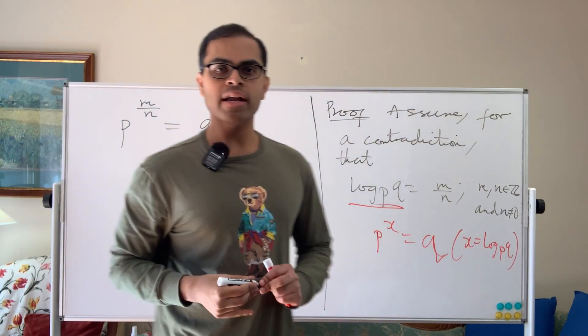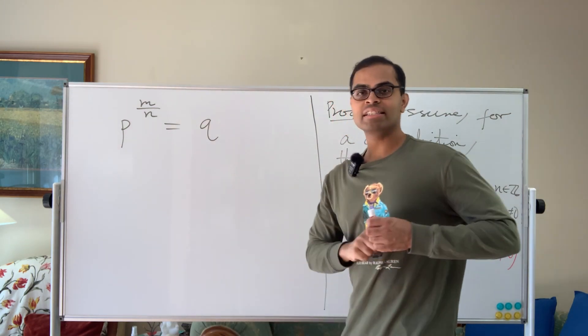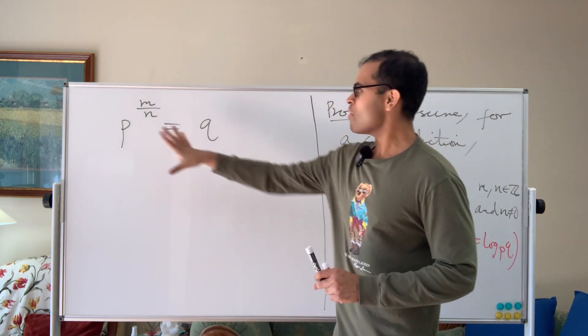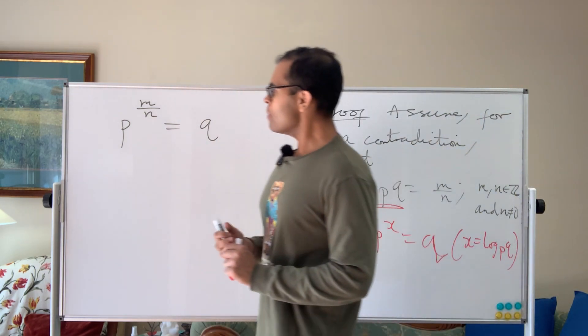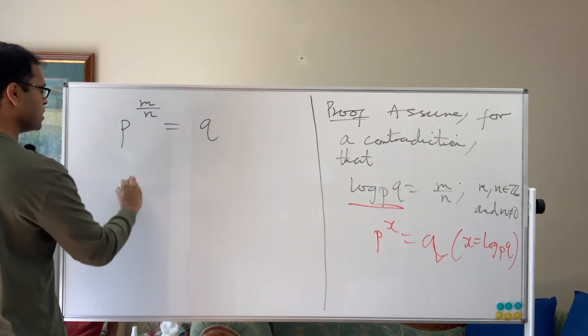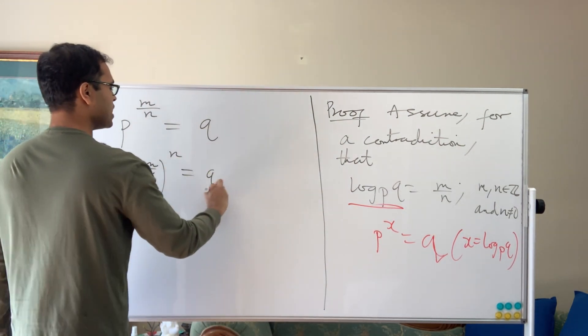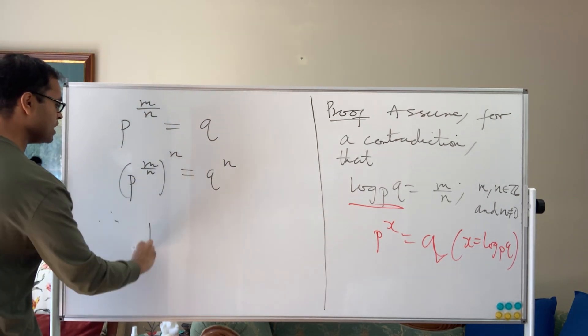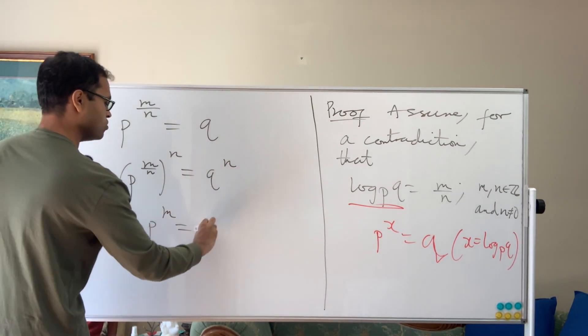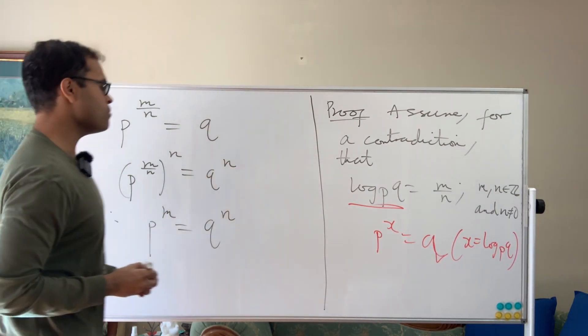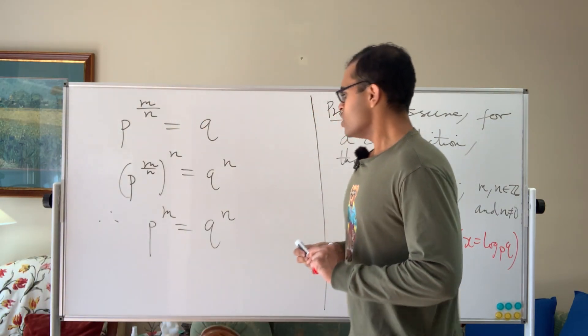So here we know that p to the m over n is going to equal q. Now, I don't know about you, but I like to, when you have ratios, I like to clear denominators. So let's power both sides by n. So if we power both sides by n, we're going to get p to the m over n power n is going to equal q to the n. So therefore, we know that p to the m is going to equal q to the n. So all I've done is m over n times n is m. So we've got this.